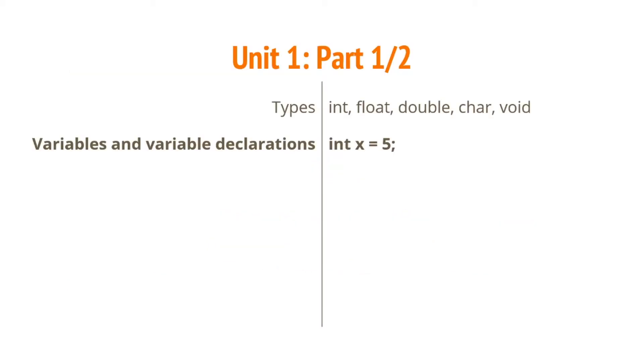In unit 1 we cover data types which are ints, floats, doubles, chars, voids, and a few others that you will learn as time goes on. We also learn variables and variable declarations. An example of this is int x equals 5.